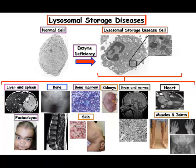Lysosome storage diseases are multi-system diseases. In individuals, they can lead to brain, renal, musculoskeletal, respiratory, and vision problems. Tay-Sachs is an example of a lysosome storage disease.